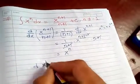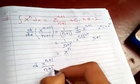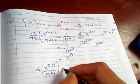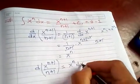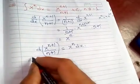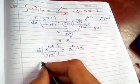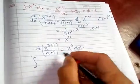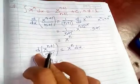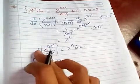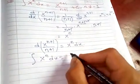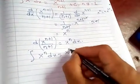Now, the derivative of x to the n plus one over n plus one equals x to the n. If I transfer dx to the right hand side, I get x to the n dx. Now if you integrate this one, the integration of x to the n dx...